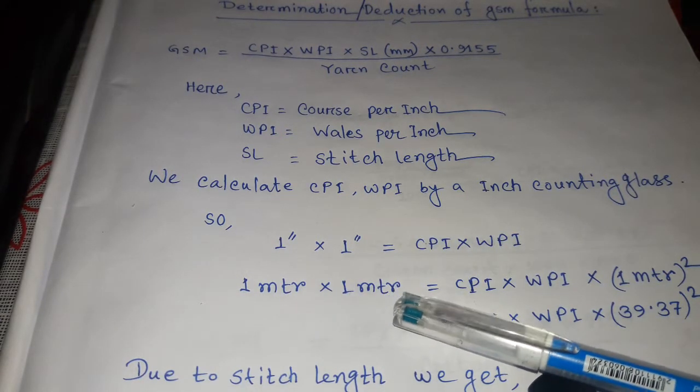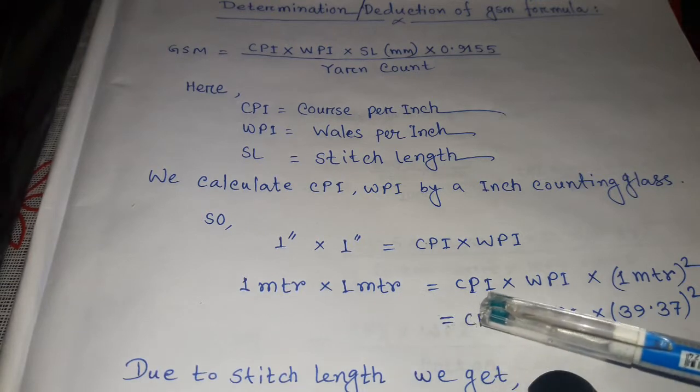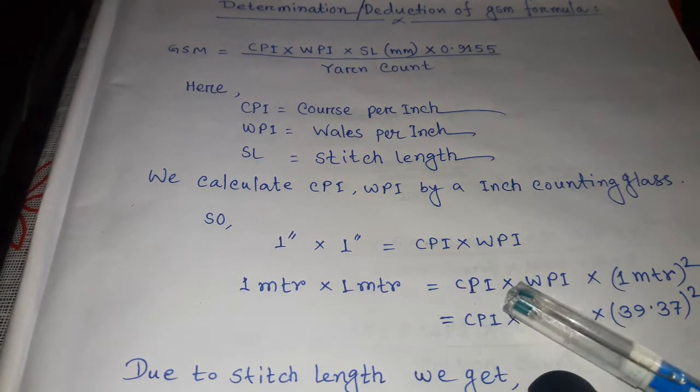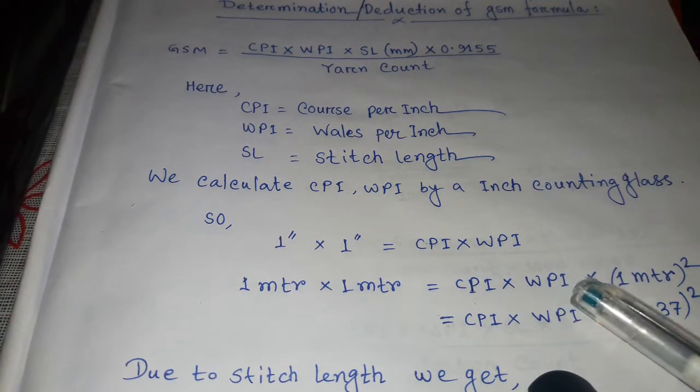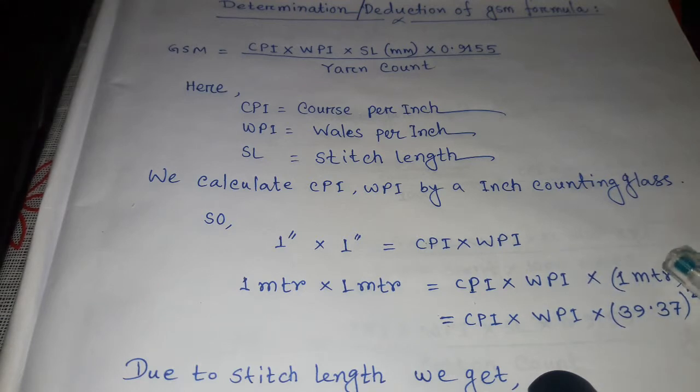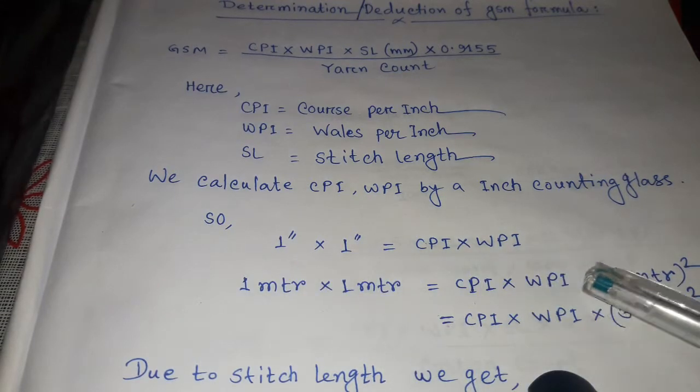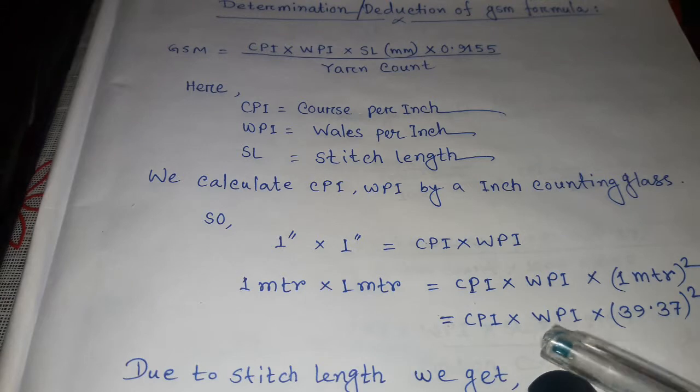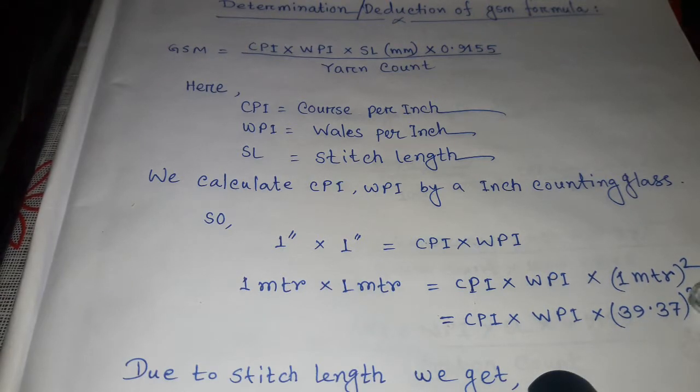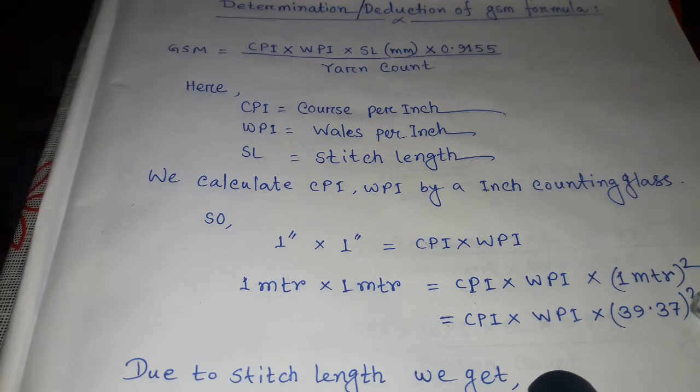One meter times one meter equals CPI times WPI. We multiply by one meter squared on both sides, which gives us CPI times WPI times 39.37 squared.